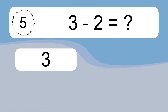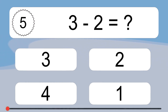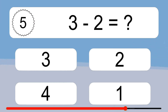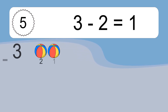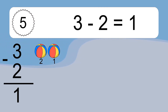3 minus 2 equals what? 3 minus 2 equals 1. Let's count it. 2, 1.